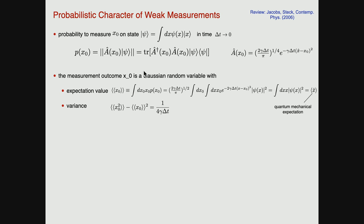Let me connect this to the Langevin discussion we had previously, and the probabilistic character of these weak measurements. The probability to measure x on a state psi — writing it in a real-space representation — in the limit delta-t to zero is just applying this operator — this smoothened delta function — which I can also write as a trace. This is just a rewriting where the operator A is the kind of smeared delta function we're using. Now the measurement outcome is a Gaussian random variable, because you can see it's a kind of Gaussian variable with something quadratic in the exponent.